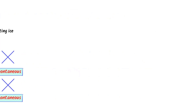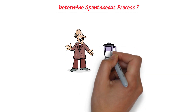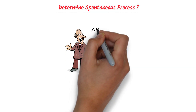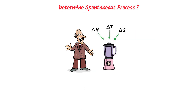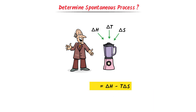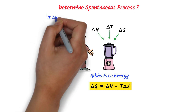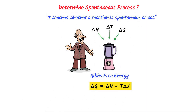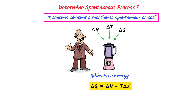So, how can we determine that a process is spontaneous? Well, here comes Gibbs. He took a blender and added ΔH, T, and ΔS to it. He formed a mixture of ΔH minus T·ΔS. He called this mixture Gibbs free energy, denoted by ΔG. Hence, Gibbs free energy tells us whether a reaction is spontaneous or not.